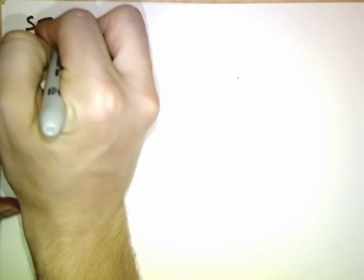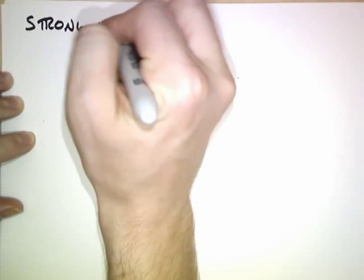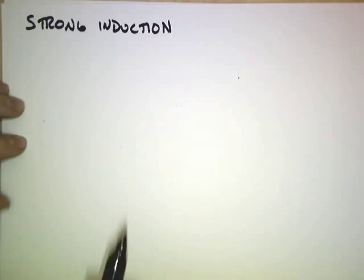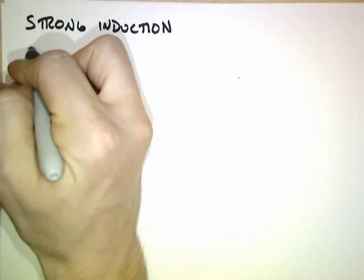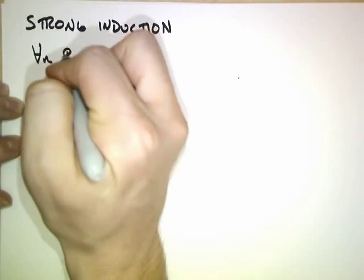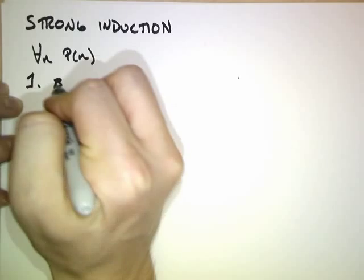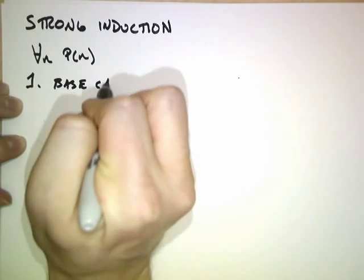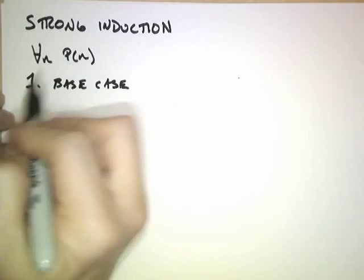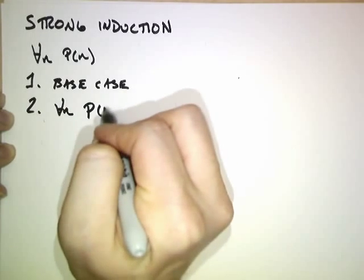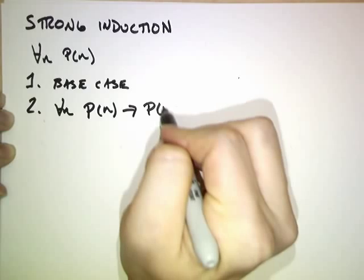We're now going to look at a proof technique called strong induction. In your usual induction setup, you'd like to prove for all n, p of n. The first step is to prove the base case. The second step is to prove that for all n, p of n implies p of n plus 1.